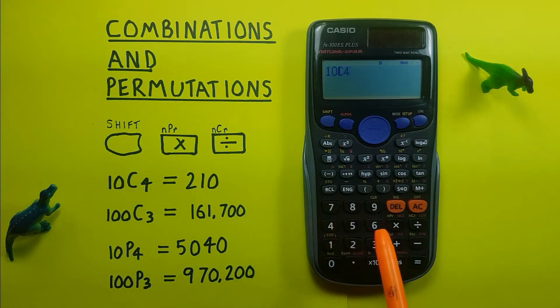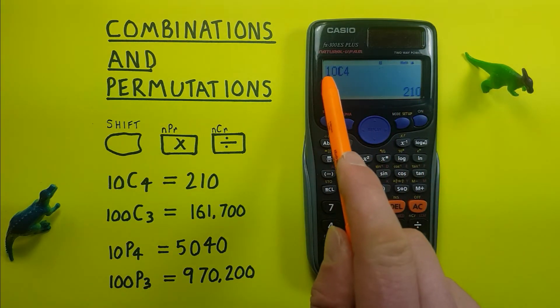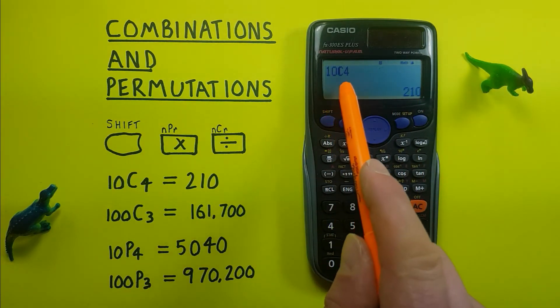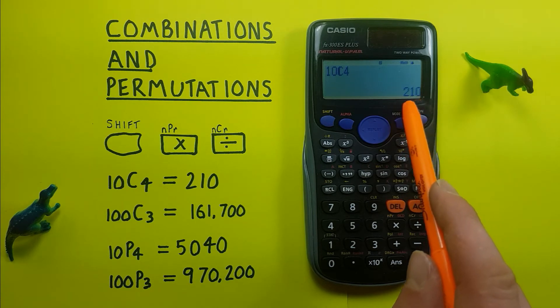Then press 4 and equals, and you get your result. If we have 10 objects and we're looking for combinations where we choose 4, we get a result of 210. There are 210 possible combinations.